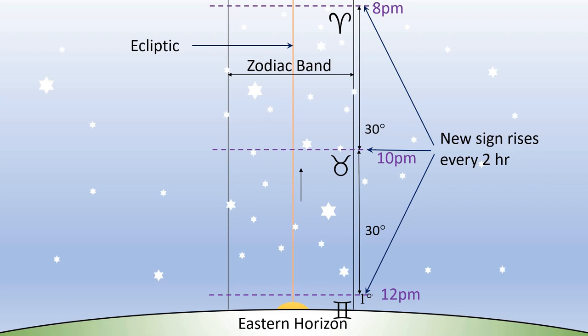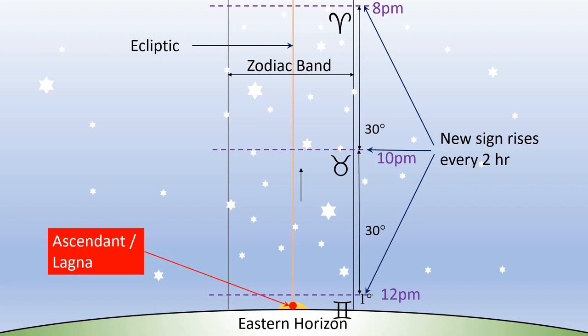Now coming to the most important bit: the ascendant or lagna is that point of the ecliptic which is rising at any given time on the eastern horizon, as shown on the screen. Since a new sign rises every two hours, lagna or ascendant changes its sign or Rashi every two hours. The lagna is related to the time and place of birth — this is to differentiate between two people born on the same day and same time but at different places, or two people born on the same day and same place but at different times of the day.